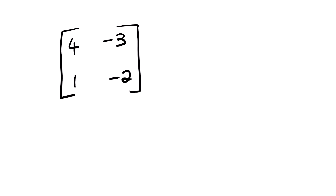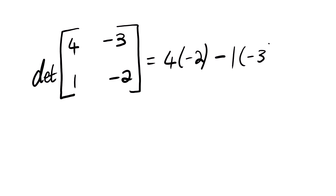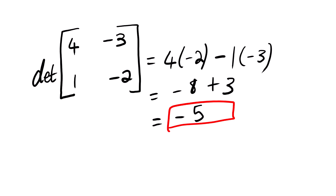Go ahead and determine the determinant of this matrix. Now the determinant of this matrix is equal to 4 multiplied by negative 2, minus 1 multiplied by negative 3. We have negative 8, positive 3. So the determinant of this matrix is equal to 5. That is how we calculate the determinant of a 2 by 2 matrix.